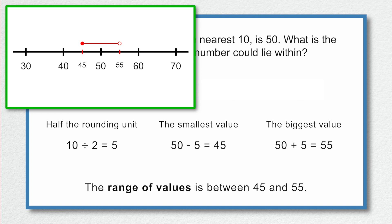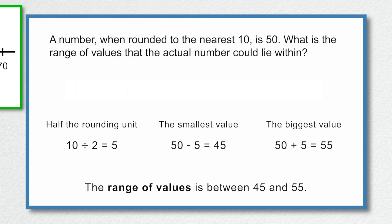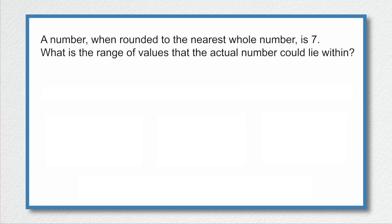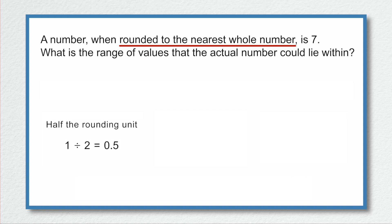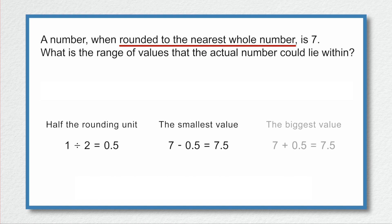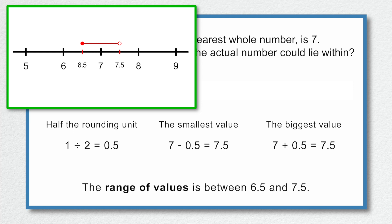The second example: a number when rounded to the nearest whole number is 7. On our number line we have whole numbers — 4, 5, 6, 7, 8, 9 — going up in stages of 1. So we divide 1 by 2, giving 0.5. The smallest value is 7 subtract 0.5 = 6.5, and the biggest value is 7 add 0.5 = 7.5. Our range is 6.5 to 7.5.